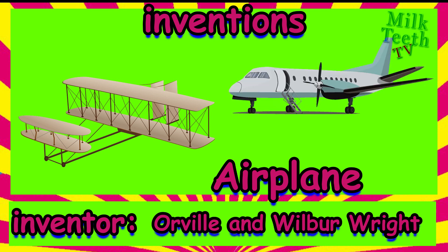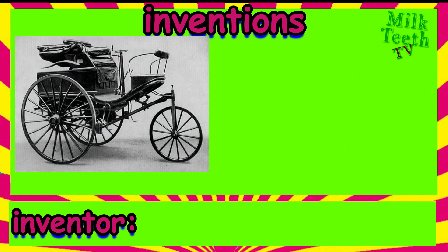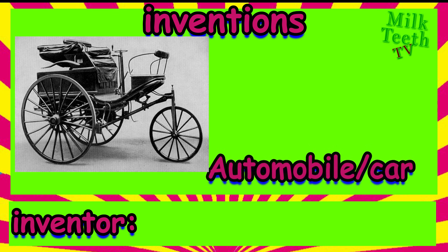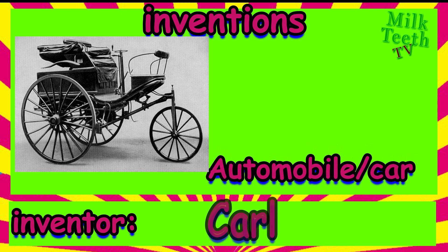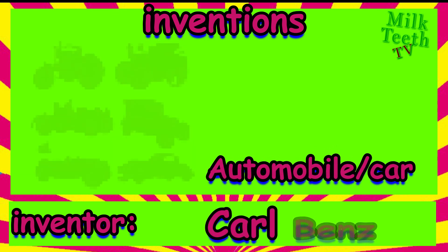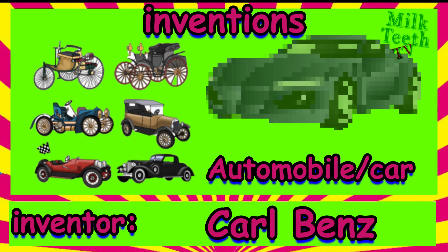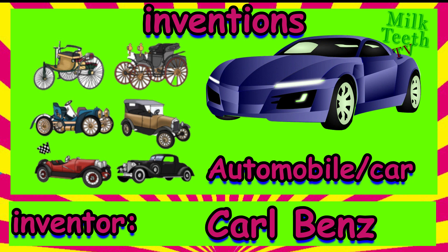This is an automobile — the earliest version of the car that we drive today. It was invented by Carl Benz. It has also come a long way, from early models to the modern sports car.